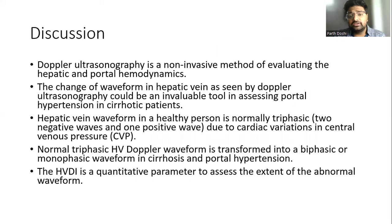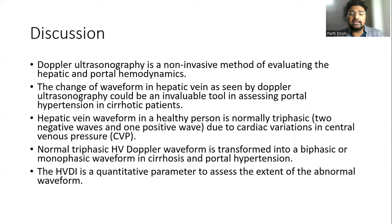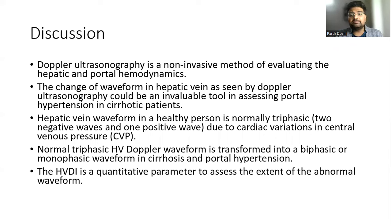Doppler ultrasonography is a non-invasive method of evaluating hepatic and portal hemodynamics. The change of waveform in the hepatic vein as seen by Doppler ultrasonography could be an invaluable tool in assessing portal hypertension in cirrhotic patients. Hepatic vein waveform in a healthy person is normally triphasic — two negative waves and a positive wave — due to cardiac variations. This normal triphasic hepatic vein Doppler waveform is transformed into a biphasic or monophasic waveform in cirrhosis and portal hypertension. The hepatic vein damping index is a quantitative parameter to assess the extent of this abnormal waveform.